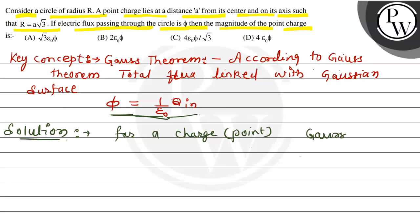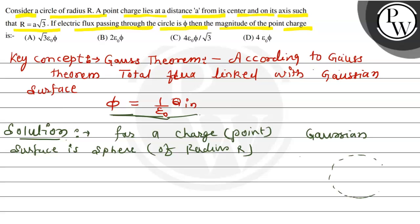The Gaussian surface is a sphere. Here we go to a sphere of radius R. We can calculate the flux as Q enclosed divided by ε₀.